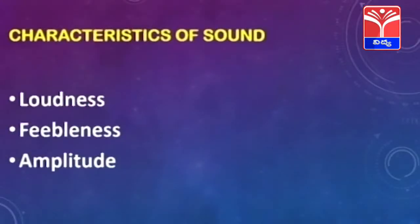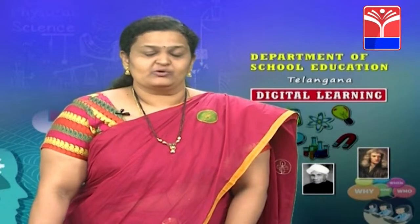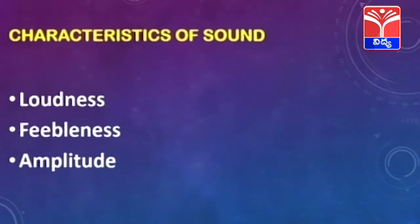How do we understand the sound? Sound is of different types. Sound can be very loud and very feeble. For example, if you shout at the top of your voice or the bursting of crackers — that is a loud sound. Listening to soft music or talking in a low tone is a feeble sound. The third characteristic of sound is the amplitude. So these three are the characteristics of a sound by which sound can be identified.